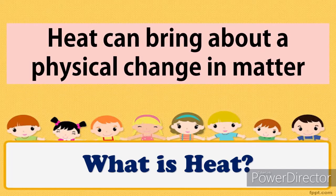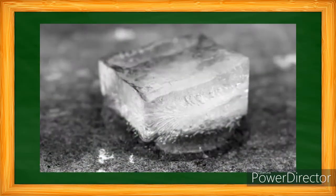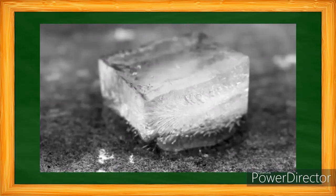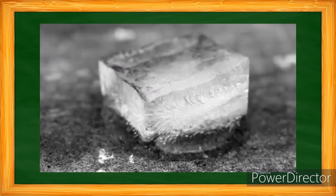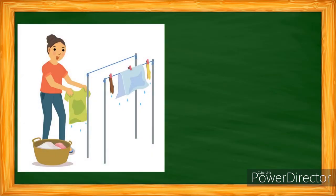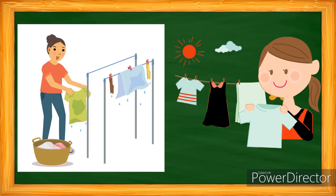Heat can bring about a physical change in matter. Some solid materials melt when heat is applied to them. A common example is a piece of melting ice — the ice absorbs heat from the surroundings, which will then melt after a few minutes. On the other hand, if water evaporates, it is subjected to heat. Just like your mother hangs your wet laundry under the sun — after several minutes or hours, the clothes become dry, which means that the water in your clothes evaporated.